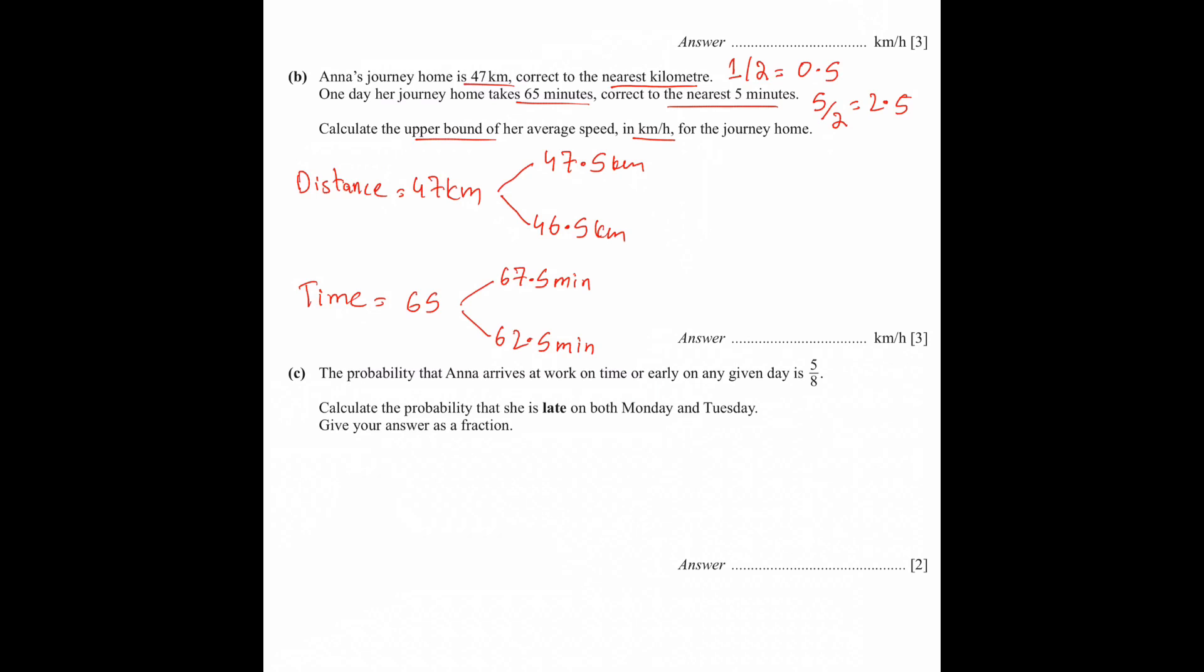Now don't do this. This is a common error which I will tell you. You have studied upper bound and you have assumed that if you need speed, then use upper bound for distance and upper bound for time. No, that is completely wrong. Speed comes from dividing distance by time. And you want maximum speed, so what do you need to do? You need to cover more distance in less time.